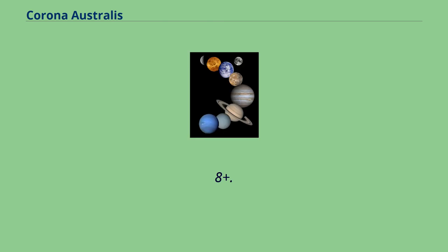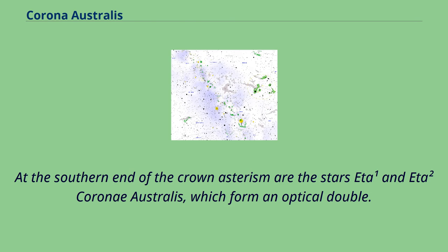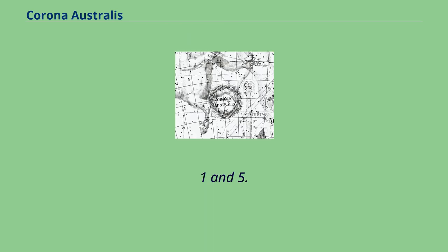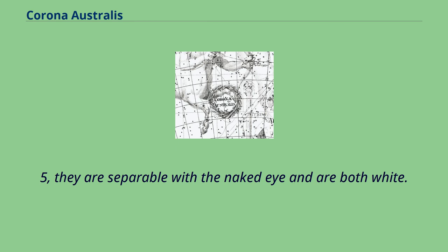At the southern end of the crown asterism are the stars Eta¹ and Eta² Coroni Australis, which form an optical double. Of magnitude 5.1 and 5.5, they are separable with the naked eye and are both white.